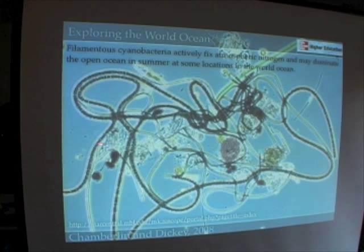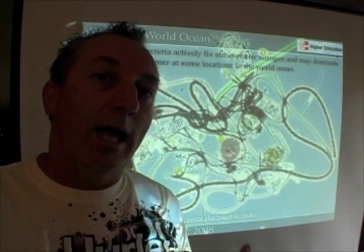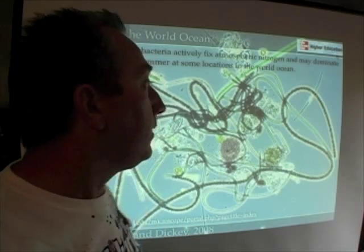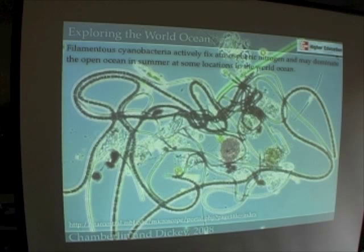Bacteria can also form chains. This is a filamentous cyanobacteria, and we find these types in lakes and ponds but also out in the middle of the ocean. One interesting thing filamentous cyanobacteria do is fix atmospheric nitrogen — they can absorb atmospheric nitrogen and make use of it. For humans to do this and put it into fertilizers takes an enormous amount of energy, but these organisms do it very efficiently. If we could learn how to do it as efficiently as they do, we'd have agricultural crops forever.